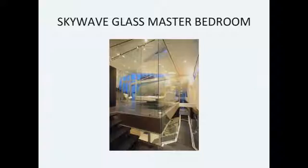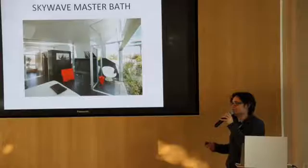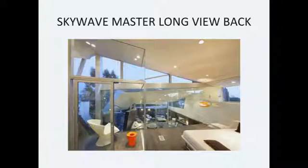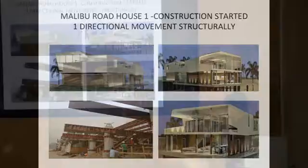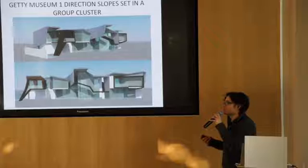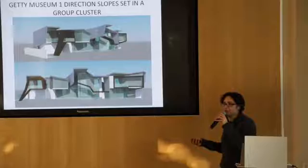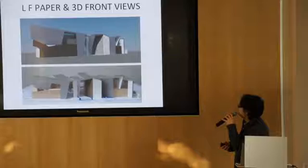Here's the master bedroom — it's a glass room in the middle of the house so you can see through the entire home. It gives you a landscape feel without having mountains and extreme home locations. Some of the projects in construction now went back from the two-directional ideas of my house to one-directional, just because of the timeline it takes to build. Here's something across from the Getty Museum about to go into construction, waiting for final permits — it's a group cluster, that one-directional idea that gives you the overall movement.